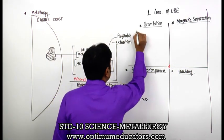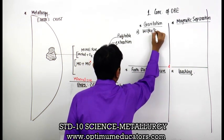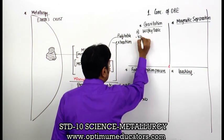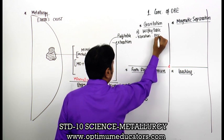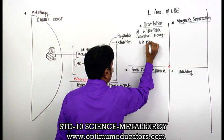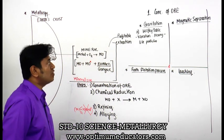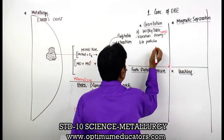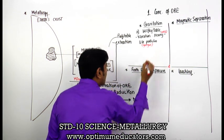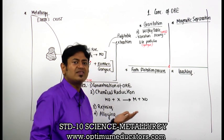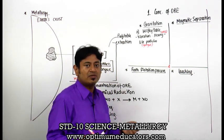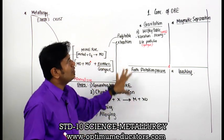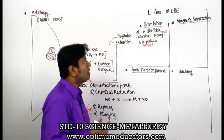In gravitation, there are two options. Option A is the Wilfley table, which has continuous vibration. In this vibration, heavy particles and light particles are separated. Heavy particles normally contain the ore, and light particles contain gang, which gets removed because of the vibrations - just like the way we try to clean grains by continuous vibration in a sieve.